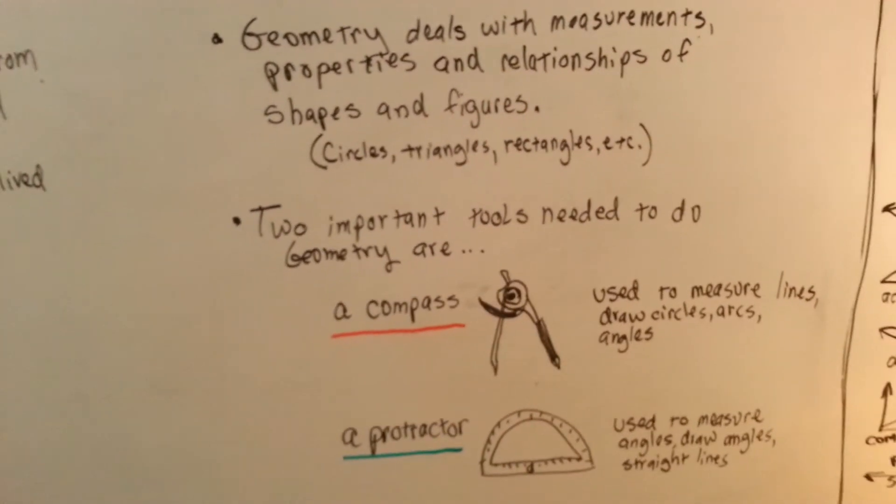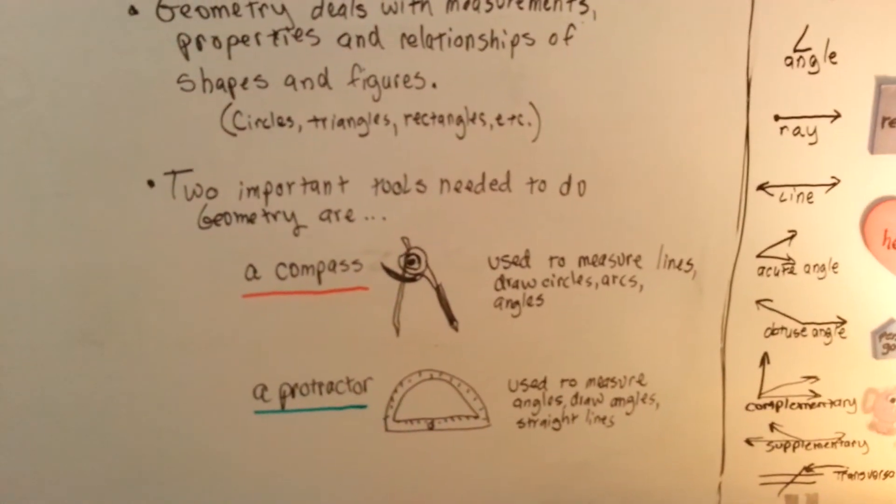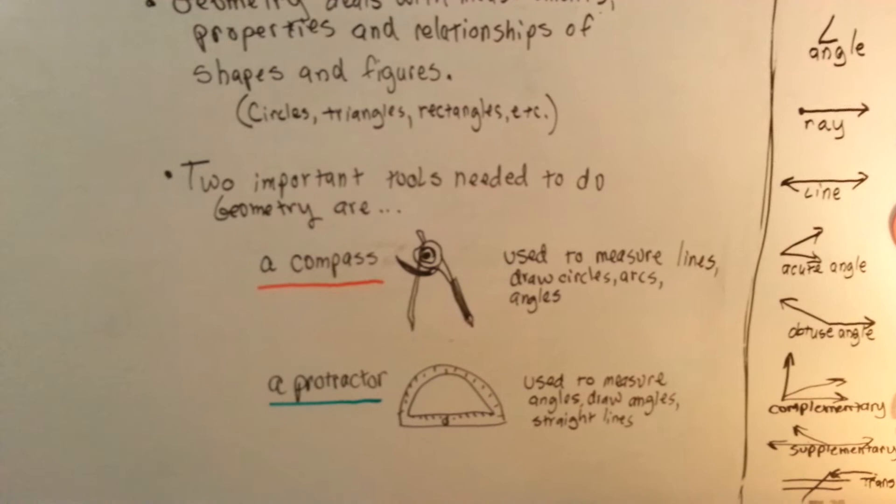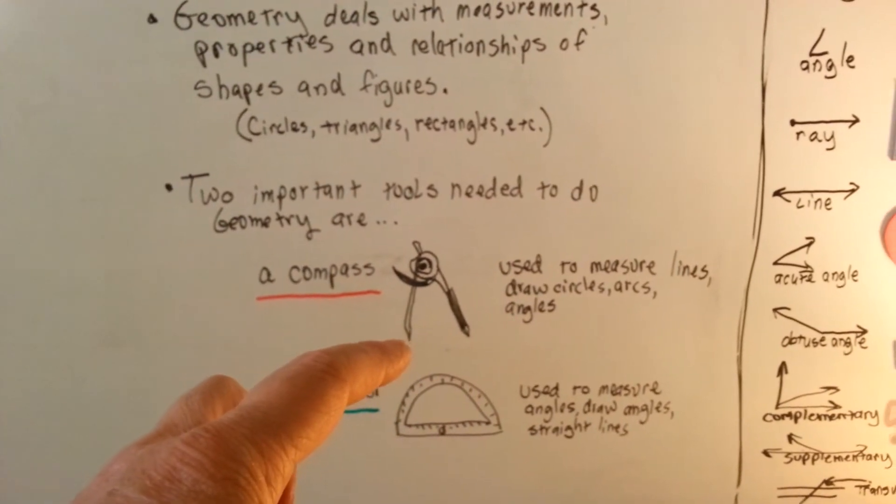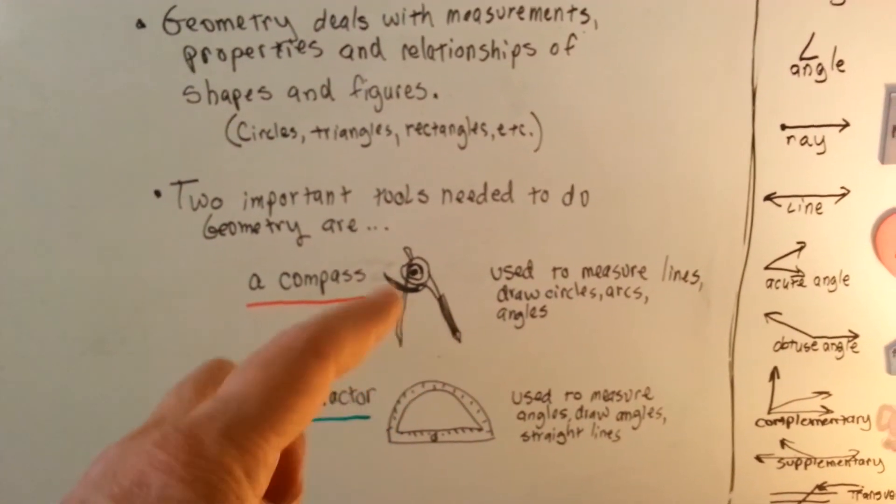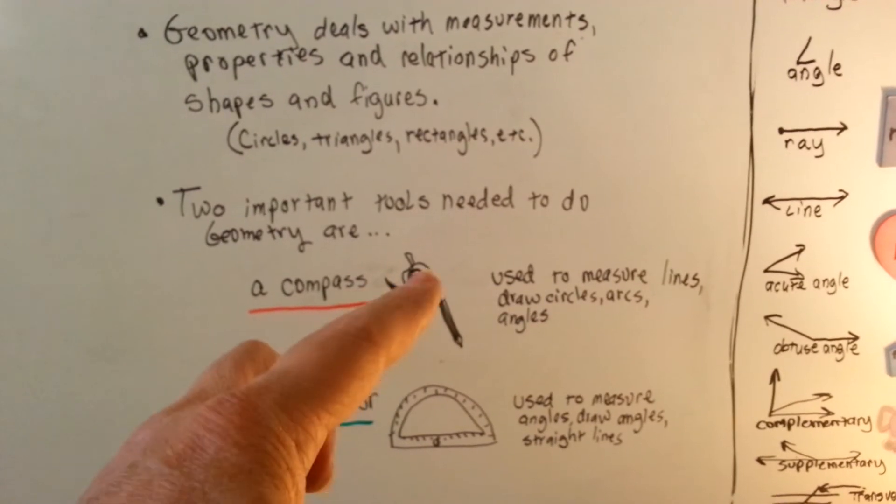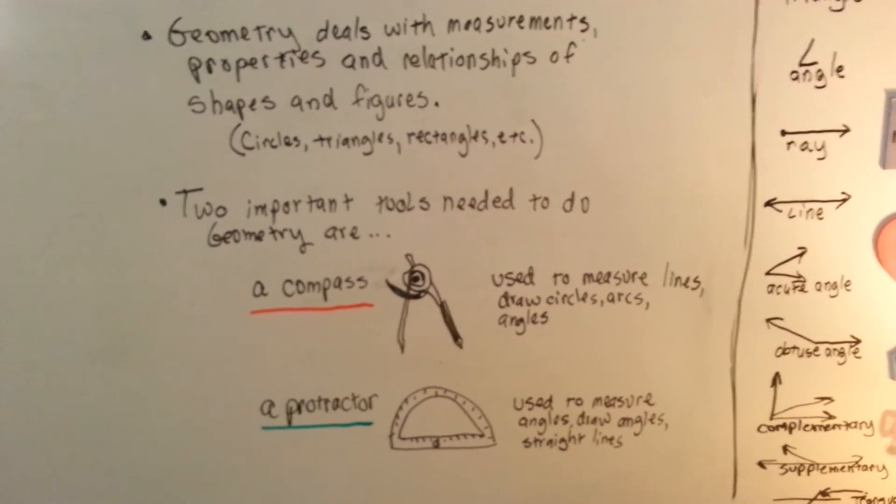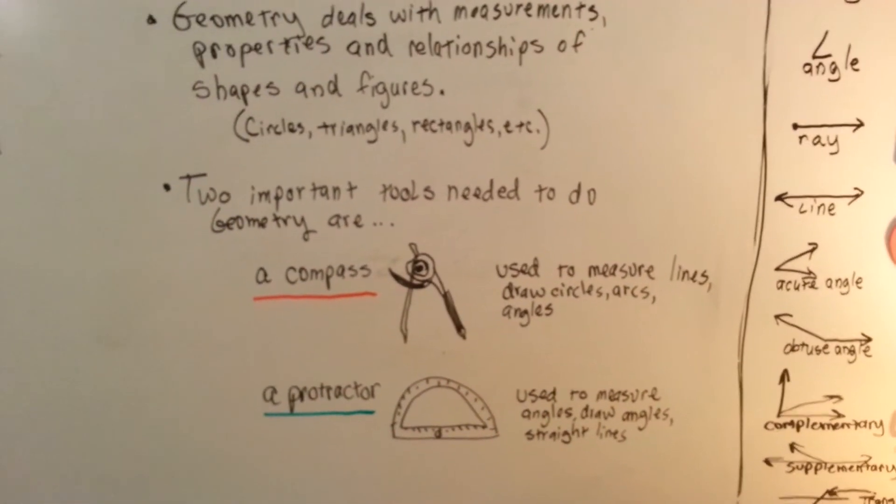There are two important tools needed to do geometry. The first is a compass, which looks like this. This is a point, this is a little pencil, and it has a measurement right here on this arc. It's used to measure lines, draw circles, arcs, and angles.